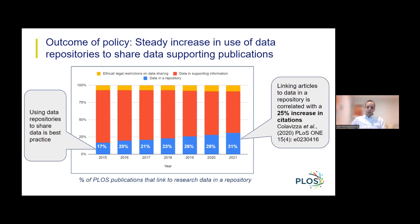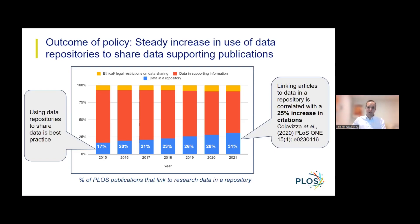The same study I cited on the previous slide, by Kolovicza et al., also found that papers sharing data in a repository could expect to attract 25% more citations than papers sharing data by other methods. So while sharing data in a repository might be a bit more work for some of our authors, it is clear that there are certainly a number of benefits of making data available in a manner compatible with the FAIR principles.